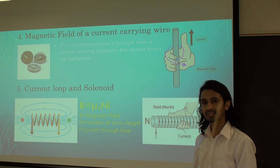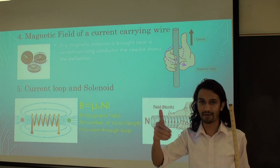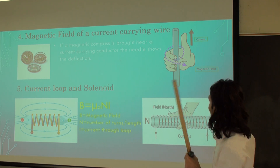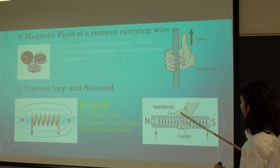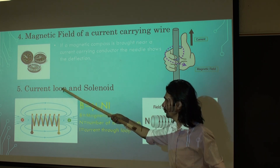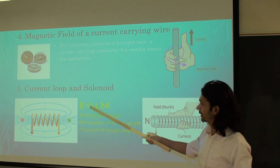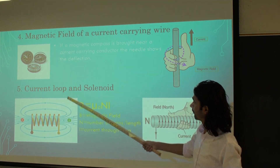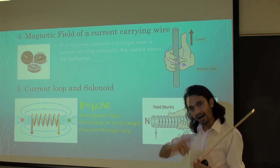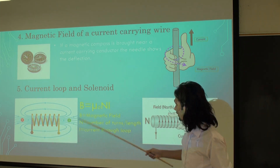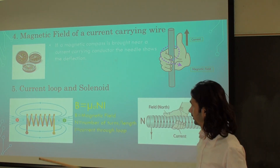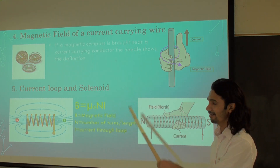For a current loop, we use the same right-hand rule: if the curled fingers show the direction of current, the thumb points the direction of the magnetic field. If we have multiple current loops — several turns — that is called a solenoid, and it creates a magnetic field in the same way. The field strength of the solenoid depends on the number of turns per unit length: a higher number of turns produces a stronger magnetic field inside. It also depends on the current flowing through the wire — more current generates a stronger magnetic field. That's the lab, thank you.